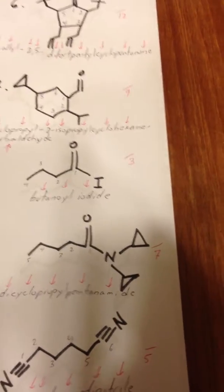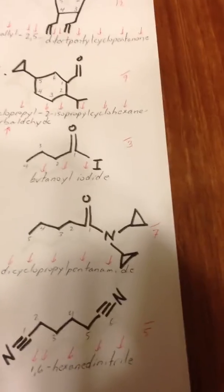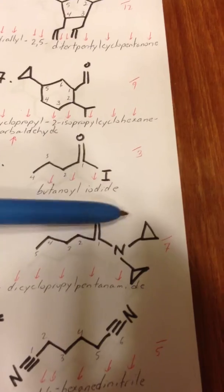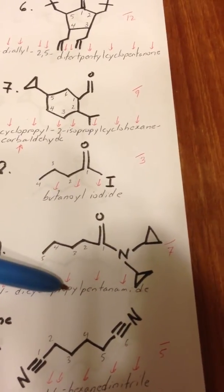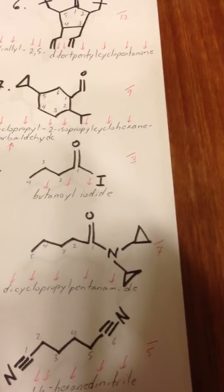There are two cyclopropyl groups attached to the nitrogen, so we say N,N, to indicate that there are two things attached to the nitrogen, dicyclopropyl pentanamide.